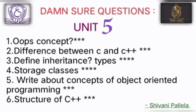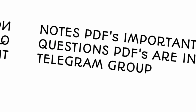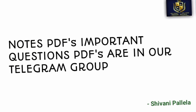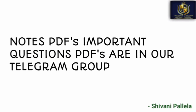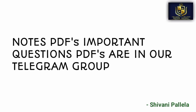In unit number five, OOPs concepts are very important. Differences between C and C++ are also important — object-oriented programming versus structured language. Choose inheritance types carefully. These are all important topics. Related PDFs and notes will be uploaded to my Telegram channel.